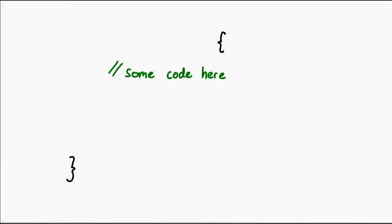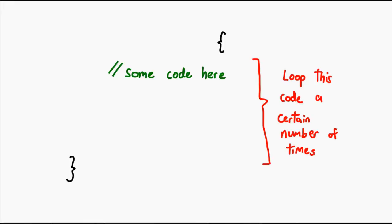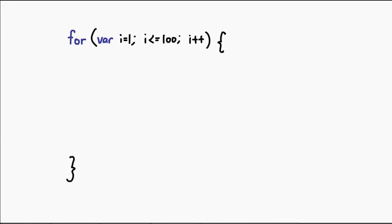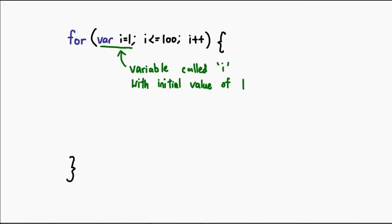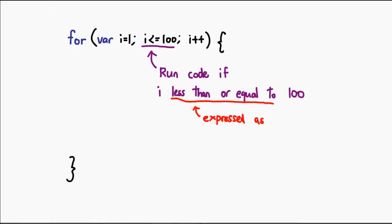We're going to start with what is known as a for loop. The concept behind a for loop is essentially that you have a chunk of code and you want to run it a certain number of times. The for loop syntax is broken up into three parts which we can read from left to right. The first part says we create a variable called i and we want its starting value to be 1. As long as i is less than or equal to 100, we run the code that is in the braces.